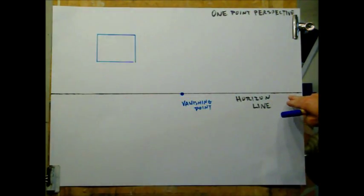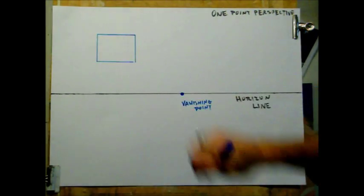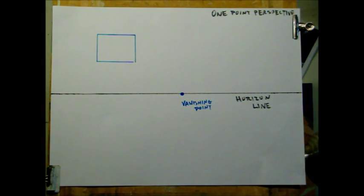So I've drawn out my horizon line, my vanishing point, and now I've got a rectangle or a square. Go ahead and draw these out. Pause my video now.